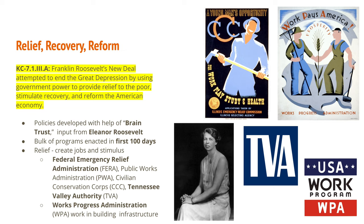The policies of the New Deal were developed with the help of the Brain Trust — a group of academics and economists that Roosevelt trusted to come up with policies and programs to help the country escape the Depression. Eleanor Roosevelt was Franklin Roosevelt's wife and was a lot more mobile than he, as he had been paralyzed from polio about 10 to 15 years before becoming president. Eleanor traveled across the country, meeting with people who were struggling, in the Dust Bowl, and those who were unemployed, bringing that input back to the White House to advocate for them.